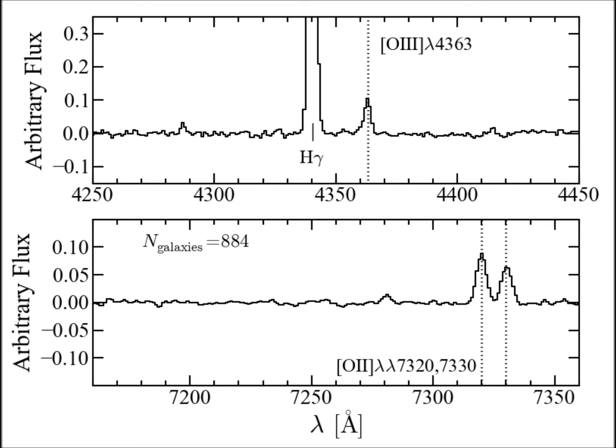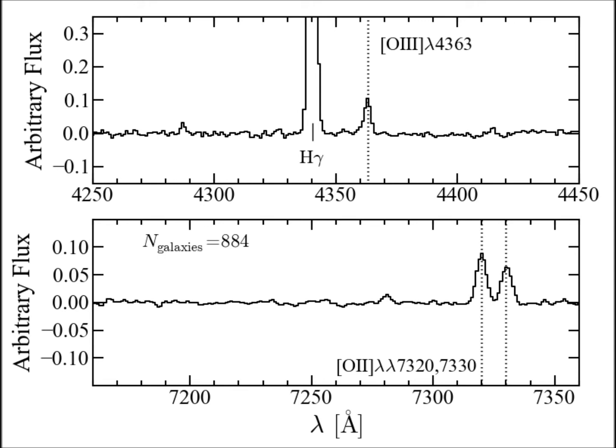We then used the auroral-to-strong line flux ratios to compute the singly ionized and doubly ionized oxygen abundances, which we summed to get the total oxygen abundance. Next, we constructed the direct method mass-metallicity relation, which spans three orders of magnitude in stellar mass and probes one order of magnitude lower in stellar mass than strong-line mass-metallicity relations. The direct method mass-metallicity relation rises steeply at low masses, then turns over at 10^8.9 stellar masses and asymptotes to a metallicity of 8.8 at high mass.